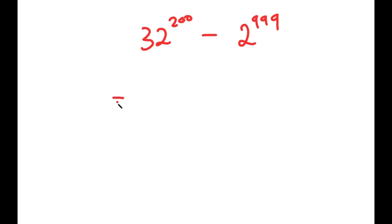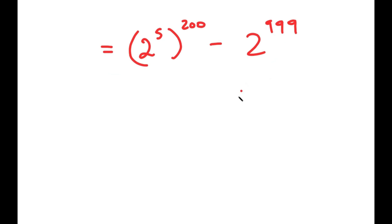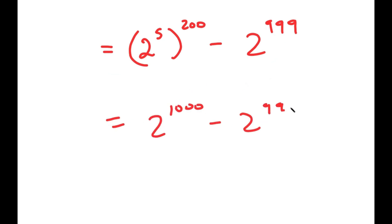To solve this, I'm going to first rewrite 32 as 2 to the power of 5. So I get 2 to the power of 5, to the power of 200, minus 2 to the power of 999. And this turns into 2 to the power of 1000 minus 2 to the power of 999, because the 5 and 200 multiply.